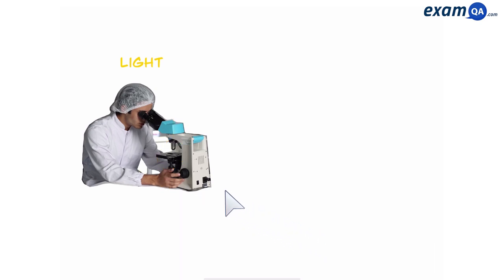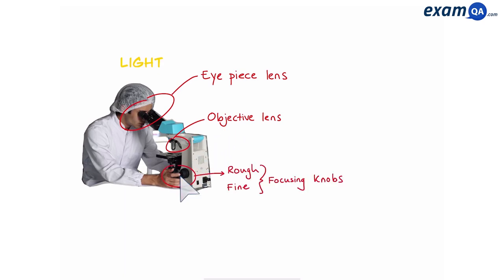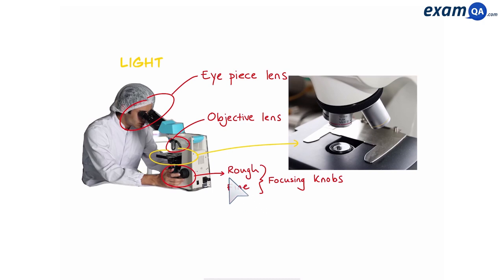Let's talk about some of the different components of a light microscope. This is the eyepiece lens. We have objective lenses over here, and you can have different power objective lenses. The rough and fine focusing knobs help to make the image clearer and easier for scientists to see. We have a stage where you put the specimen on a slide, and we use clips to secure it in place.